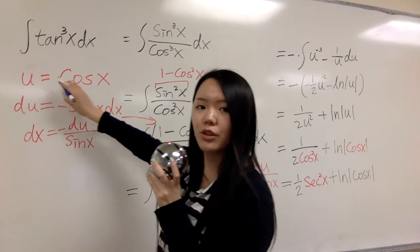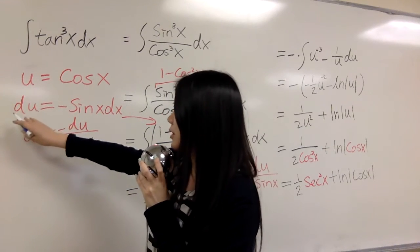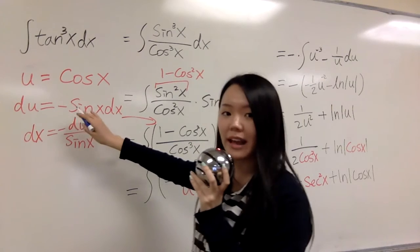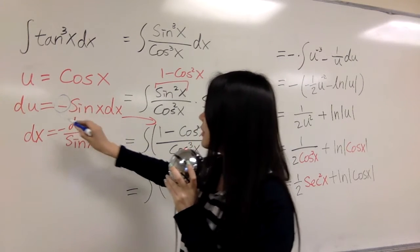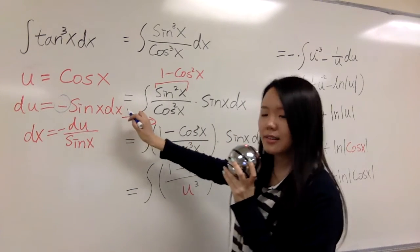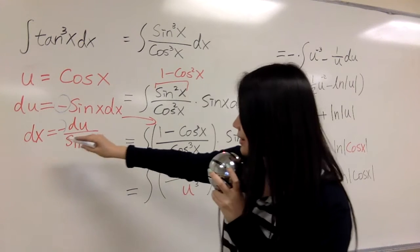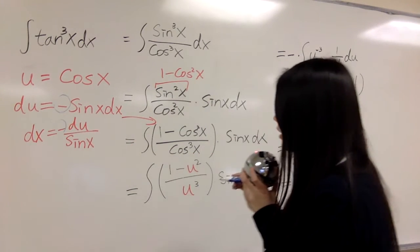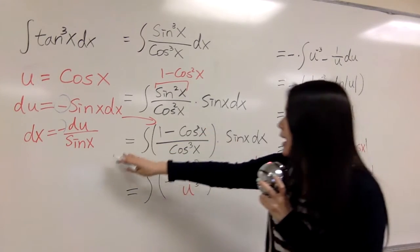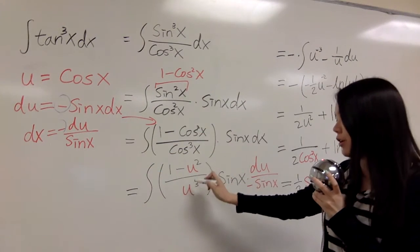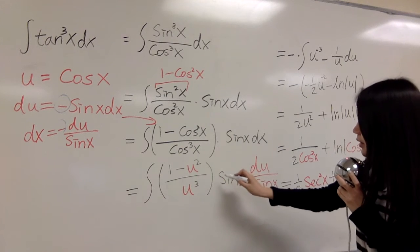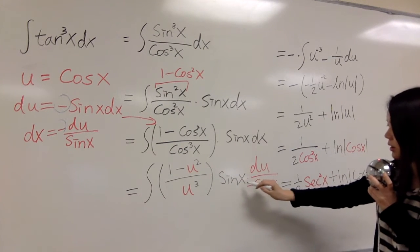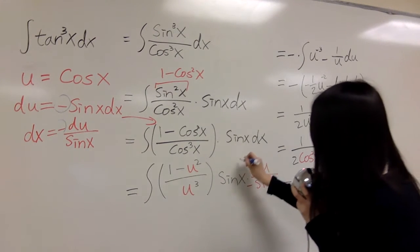Now we use u substitution. Let's use u equals cosine x. Then the derivative du equals negative sine x dx. And dx is negative du over sine x. So I put it back: 1 minus u squared over u cubed, and times this one. Now you can cancel out here.